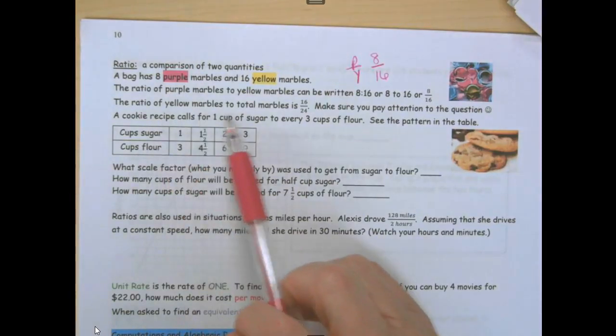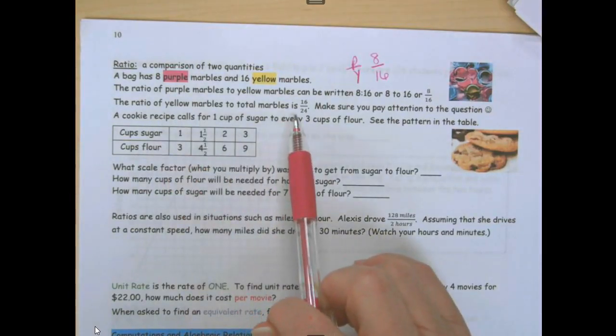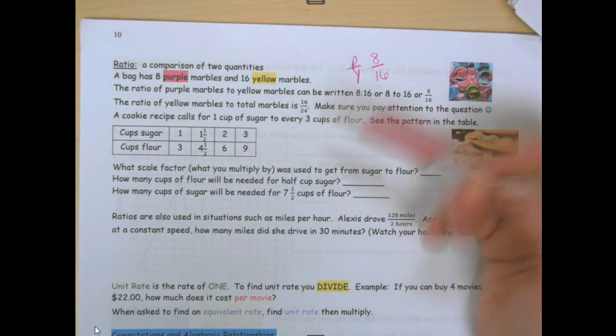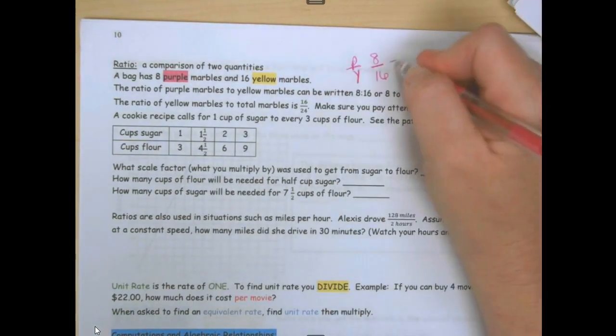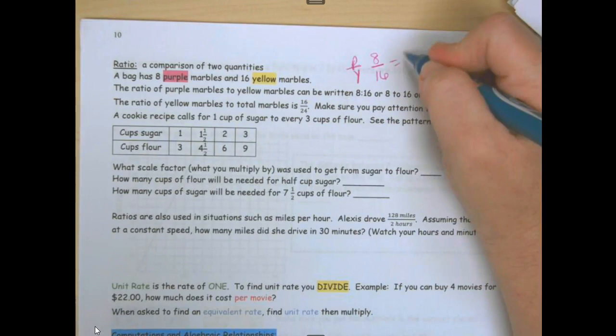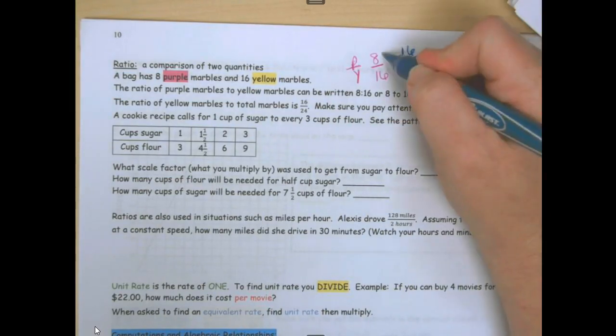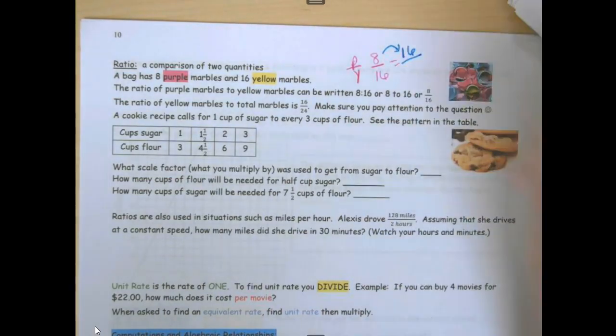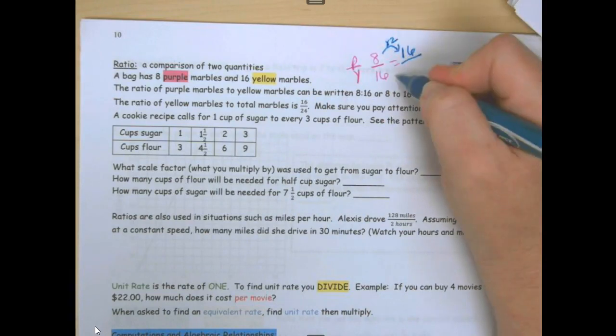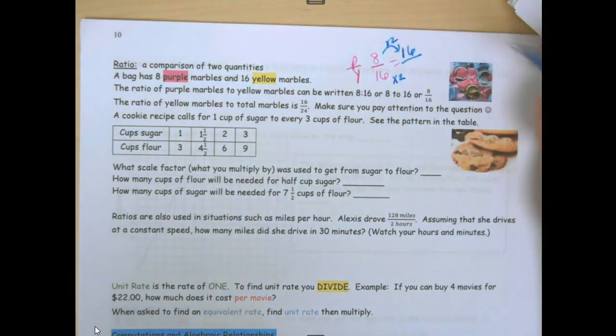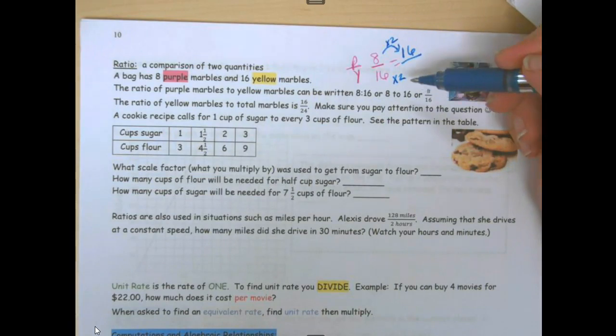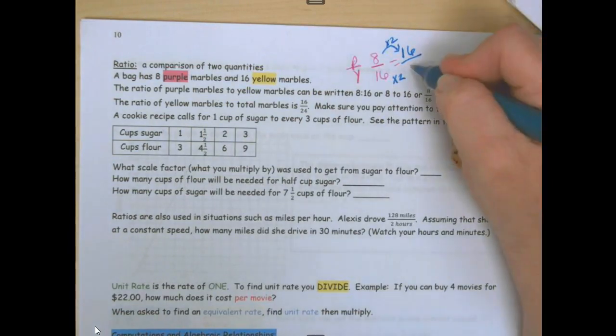The ratio of yellow marbles to purple marbles is 16 to 24. So if I have 16 purple marbles, how many yellow marbles will I have? How does 8 go to 16? Times 2. Whatever you do to the bottom, you have to do to the top. 16 times 2 is 32.